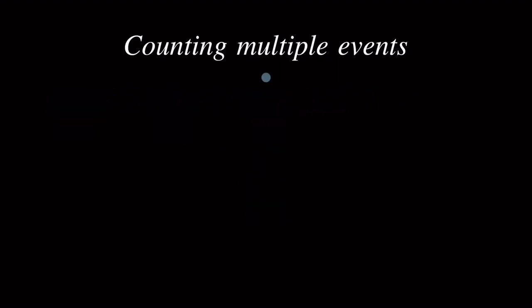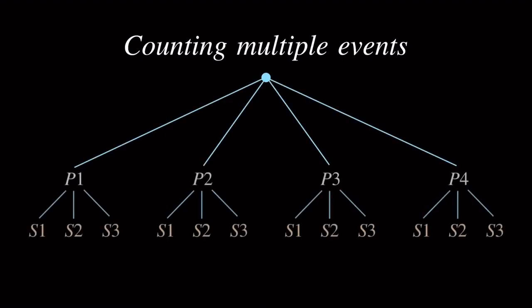We can visualize the possible outfits by drawing a tree. And notice that for each pant, we have three shirts to choose from. And because we have four pants and each pant has three possible choices of shirts, we can multiply four by three to get the possible outfit choices. So, in general, if we have a series of independent events, we can multiply to count them.